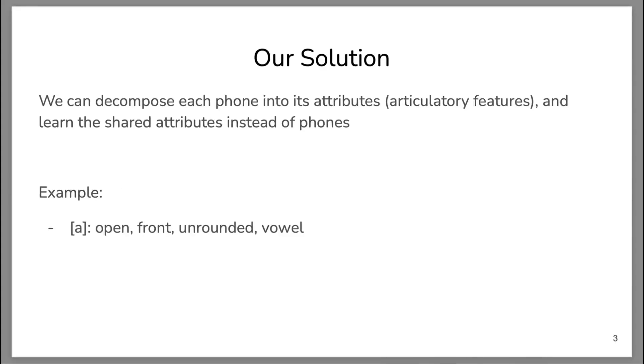Our solution is to decompose each phone into its attributes. These attributes are called articulatory features or phonological features, which are well-defined in phonetics and phonology. We can learn the shared attributes instead of the phones themselves. For example, if we have the phone 'a', we can decompose it into open, front, unrounded, and vowel—four different attributes characterizing this phone.